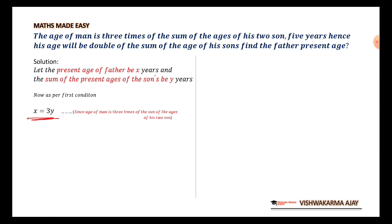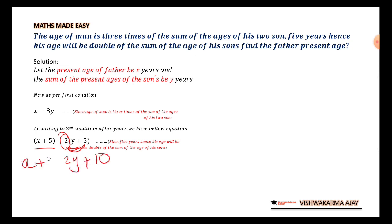Now, as per the second condition, after five years, the age will be doubled. So, X plus 5 and Y plus 5 times 2. Now, we will be multiplying with 2 in the right hand side bracket. So, we will be having 2Y plus 10, X plus 5.